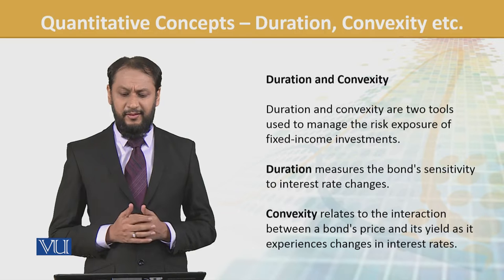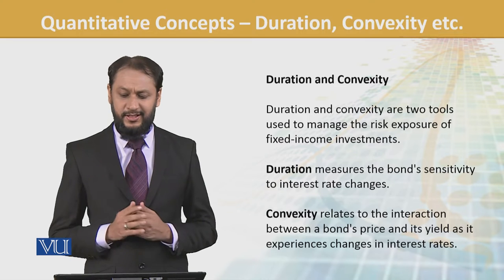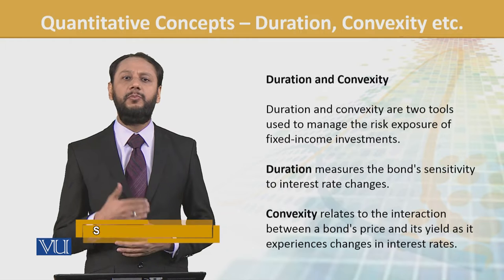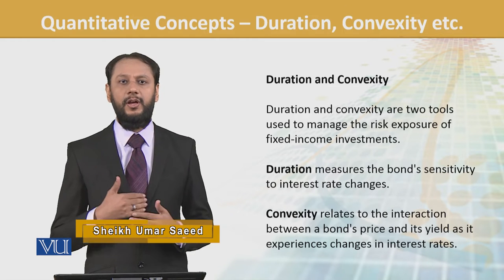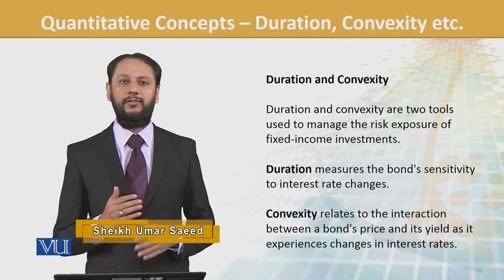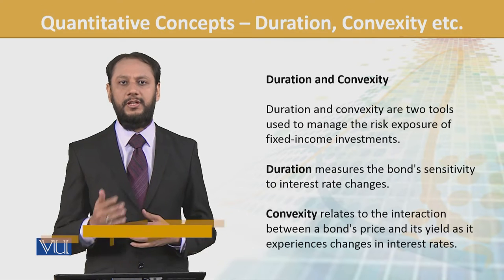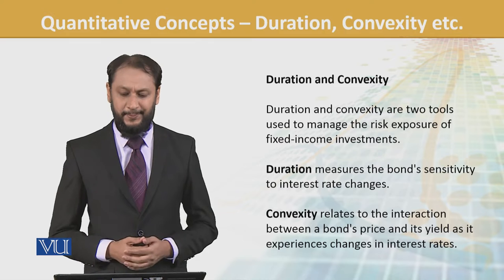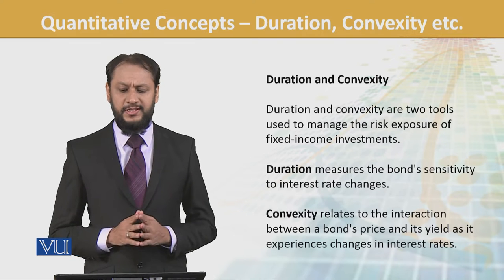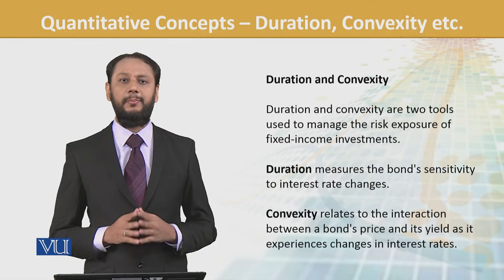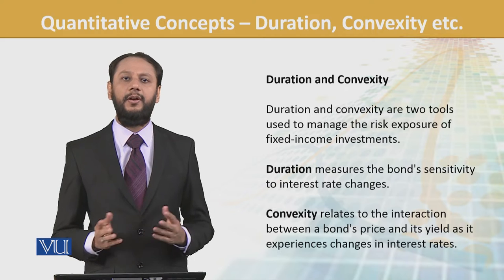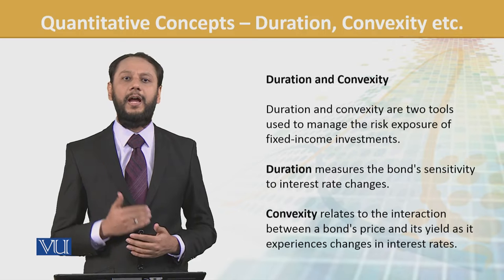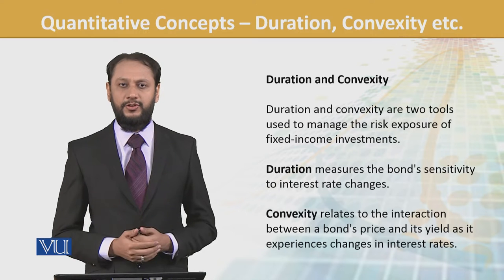Duration and Convexity are tools used to manage risks for fixed income instruments — bonds, T-bills — where fixed income streams are involved. We are not talking about equities; we are talking about bonds and T-bills. Duration measures bond sensitivity to interest rate change. When it comes to fixed income, our main driver is the interest rate, so we want to gauge what impact an interest rate change will have on us — that's mainly gauged through duration.